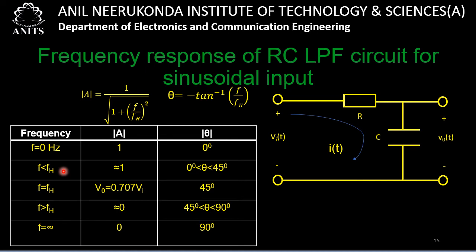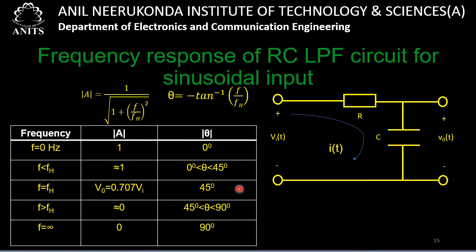When f < fH, the phase angle is between 0° and 45°. At f = fH: gain = 1/√2 = 0.707, meaning the output is 0.707 times the input — the output has reduced from 1. The phase angle is exactly 45° at f = fH.